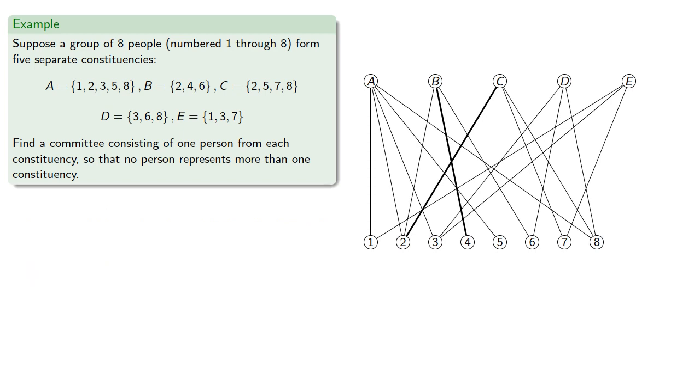Our next vertex is D, and to the lowest-numbered neighbor, D3 is not yet included in our matching, and so we include it.